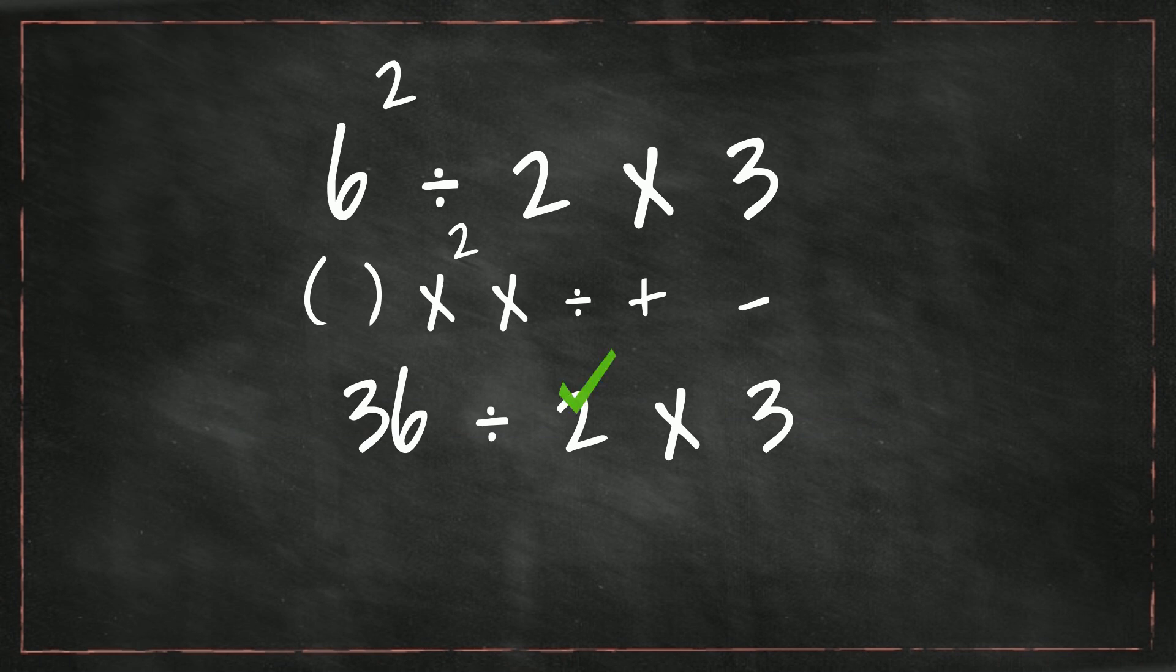So we're going to go 36 divided by 2. And 36 divided by 2 equals 18. So now we have 18 times 3, and when we work it left to right, it becomes 18 times 3, which equals 54, and not 6. I hope that was helpful.